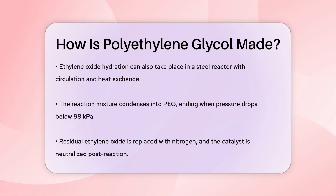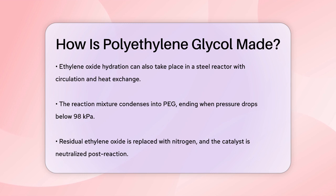After the reaction, the residual ethylene oxide is replaced with nitrogen and the catalyst is neutralized. As the molecular weight of PEG increases, it turns into a viscous solution and eventually forms a waxy substance that remains soluble in water.